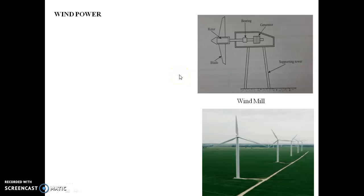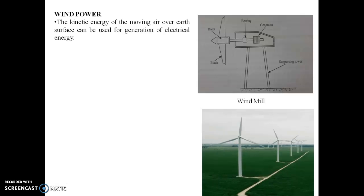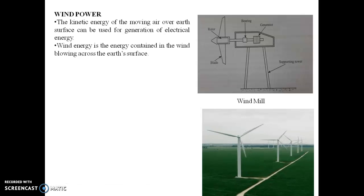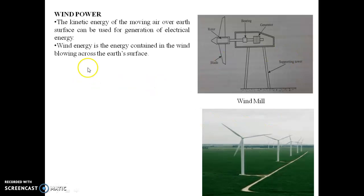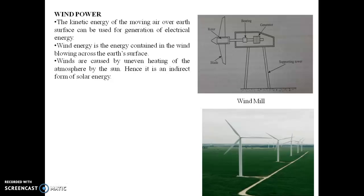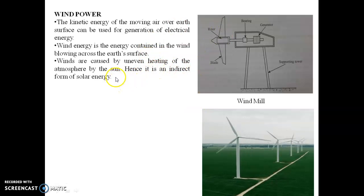In this class we will discuss wind power or windmill. Wind power is the generation of electrical energy with the help of the kinetic energy of the moving air over the earth's surface. Wind energy is the energy contained in the wind blowing across the earth's surface. Winds are caused by uneven heating of the atmosphere by the Sun.